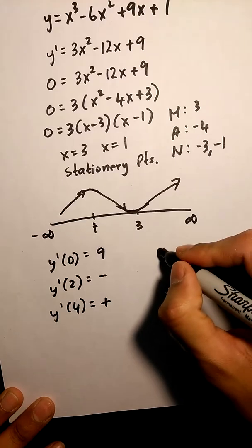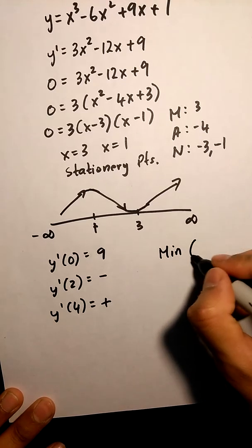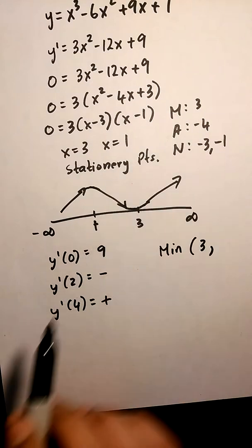Or we can just do that now. So our minimum is at 3, and then we substitute this value in the original equation.